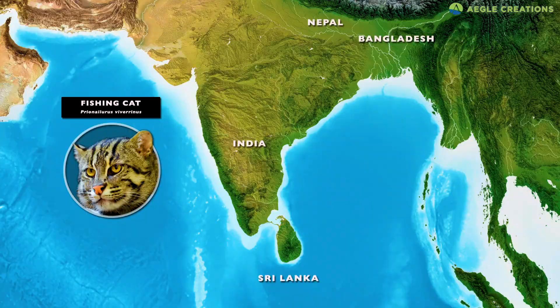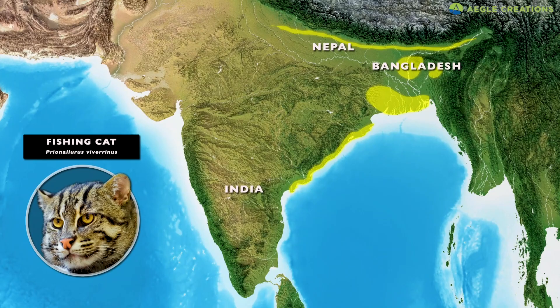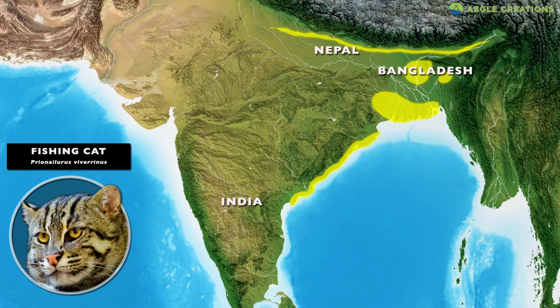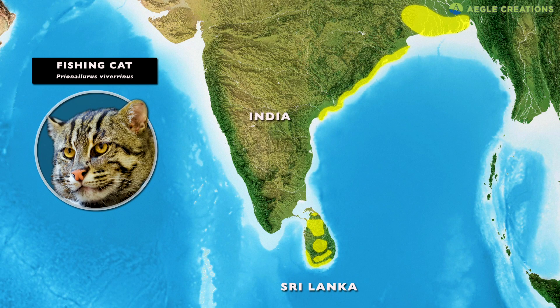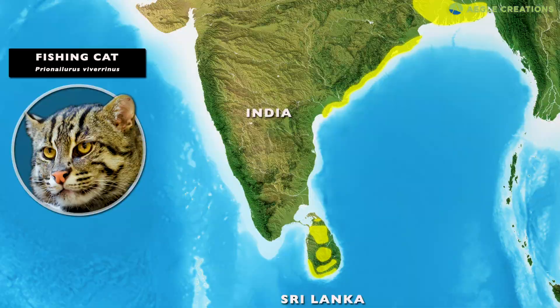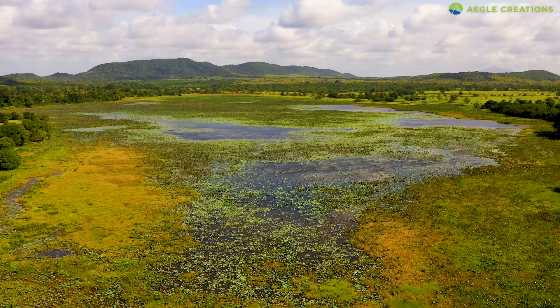The fishing cat is discontinuously distributed in Northern and Southeast Asia. Found in countries like India, Nepal and Bangladesh, it's found in all climatic zones in Sri Lanka, especially where there is a water source. Wetlands, rivers and mangroves are the preferred habitat of this feline. But they are found in urban areas too.